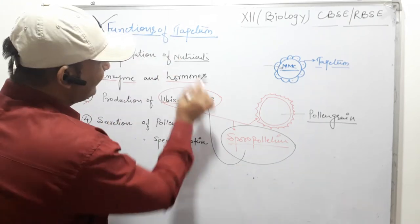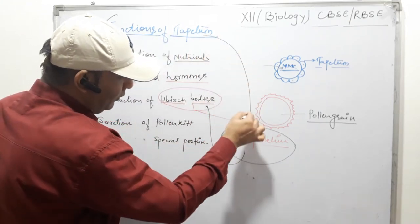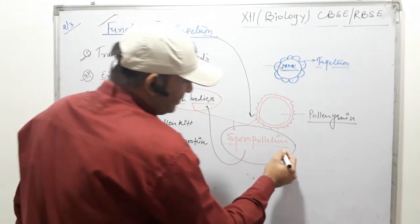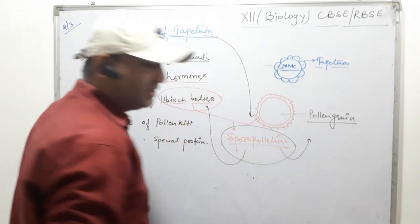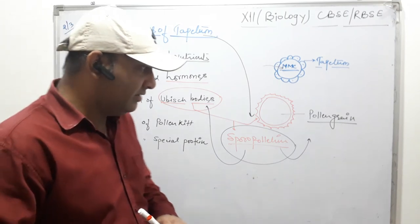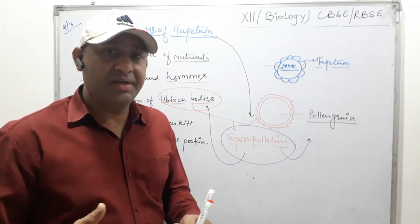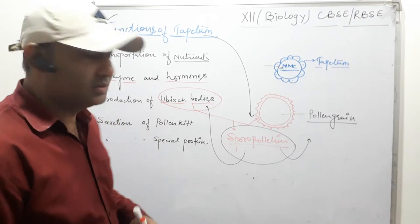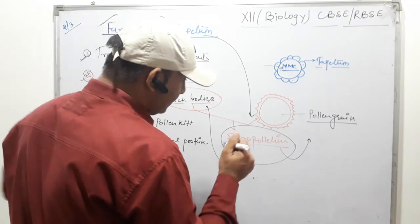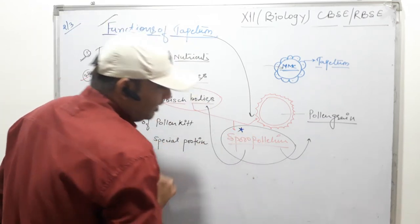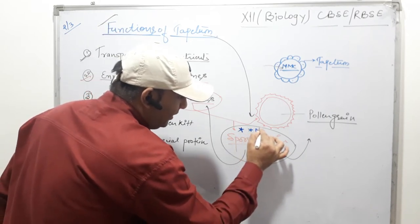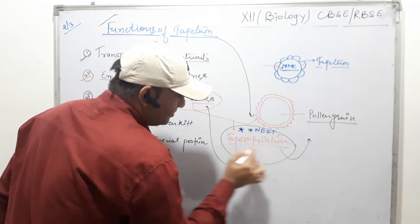Sporopollenin is the hardest substance in the plant world. It is unable to be degraded by acids, bases, or any other kind of chemicals. So sporopollenin is the hardest substance in the plant world, produced by Ubisch bodies which are produced by the tapetum. This is an important fact for NEET and other exam purposes.